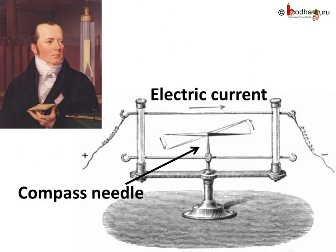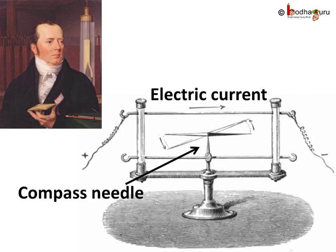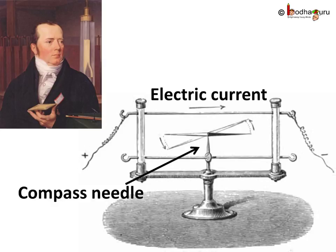Now, Hans Christian Oersted, one of the leading scientists of the 19th century, accidentally found that a compass needle got deflected when a metallic wire carrying electric current was placed nearby.